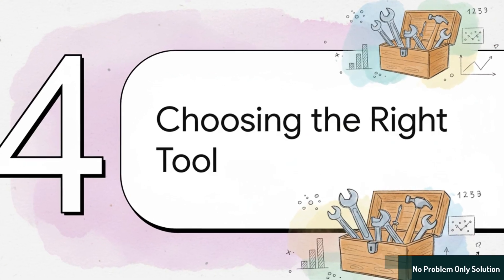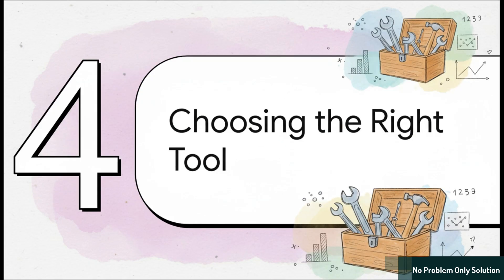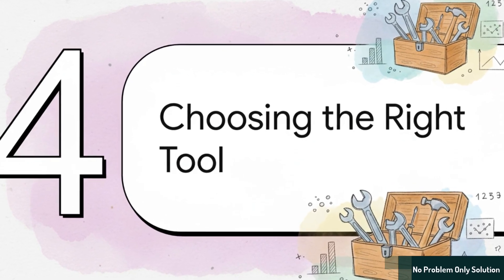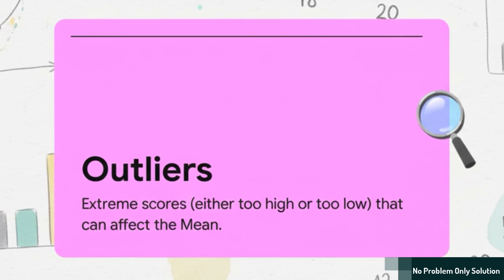Okay, so let's take a step back. We've got three tools and three different answers. This leads us to maybe the most important question of all. How do you know which tool is the right one for the job? Well, a lot of the time, the answer comes down to this one really important idea. Outliers.